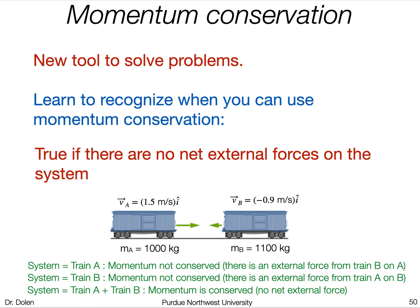That's a nice example of how we can use momentum conservation to solve a problem. As a reminder, momentum conservation is a new tool we have, but we have to recognize when we can use it and when we can't — it's only sometimes true. Momentum conservation is true when there are no net external forces on the system. In this example, I was able to use it because I defined my system as train A plus train B, so the force of A on B and the force of B on A are internal forces, not external. All external forces cancel, so momentum is conserved.